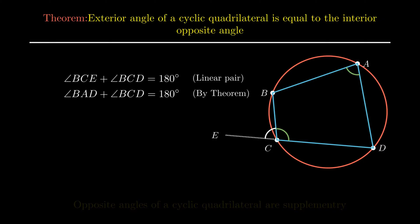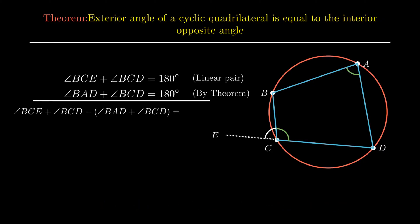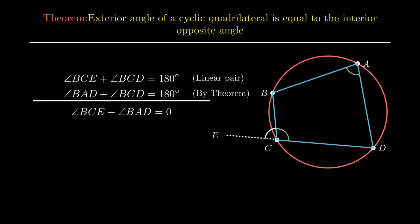On subtracting these two equations, on the LHS angle BCD cancels out angle BCD, while on the RHS 180 cancels out 180, which on simplification becomes angle BCE minus angle BAD equals 0. On transposing, we get angle BCE equals angle BAD. Hence, the exterior angle of a cyclic quadrilateral is equal to the interior opposite angle.